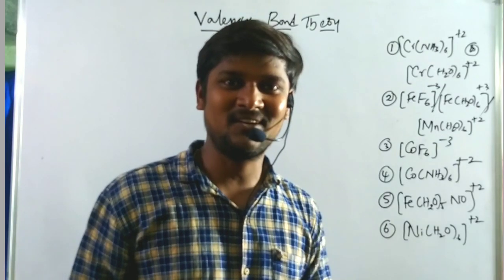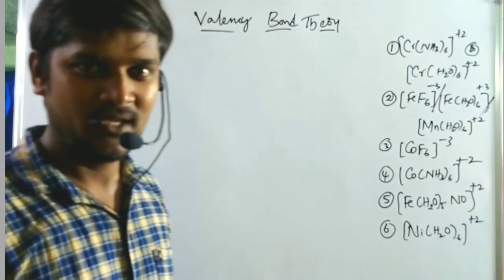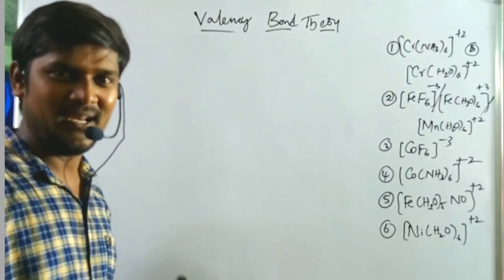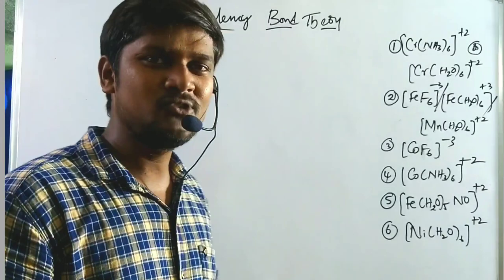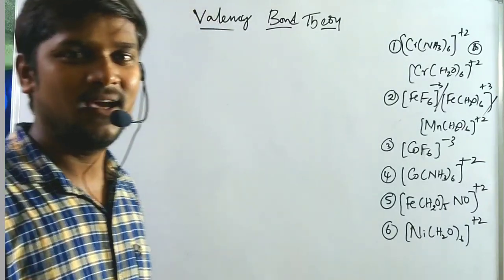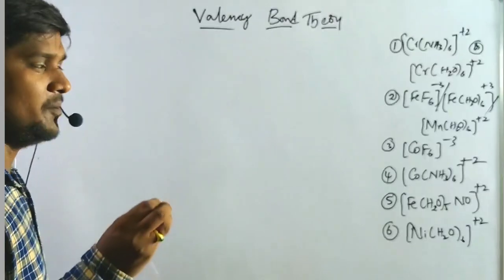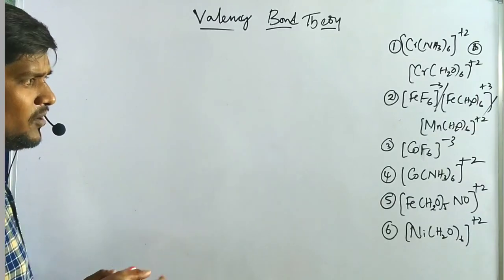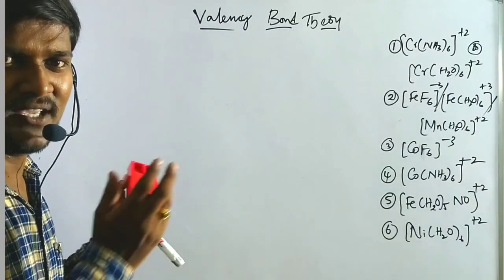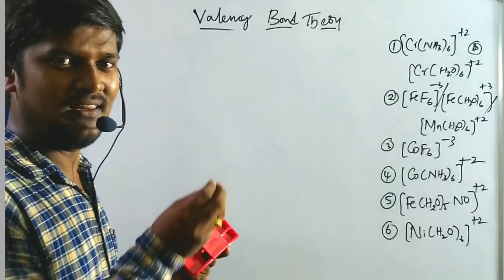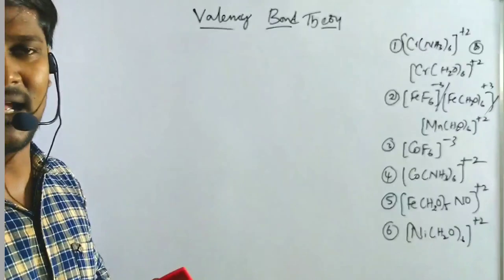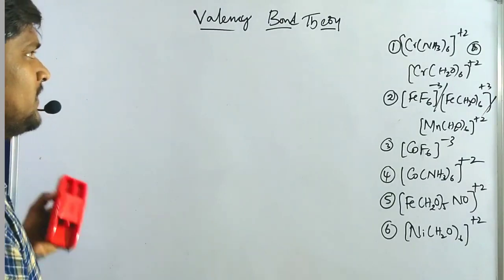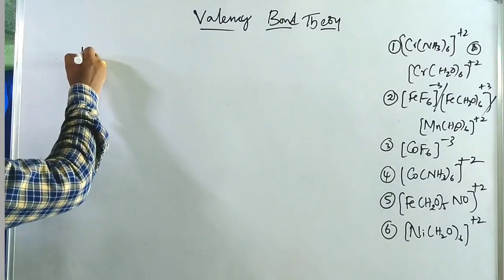Hi, welcome to RPP Resonance Chemistry. I am continuing my lectures on valence bond theory. Today our topic is outer orbital complexes. I will take some examples and solve them in a simple and trick manner. Let us take the first example.